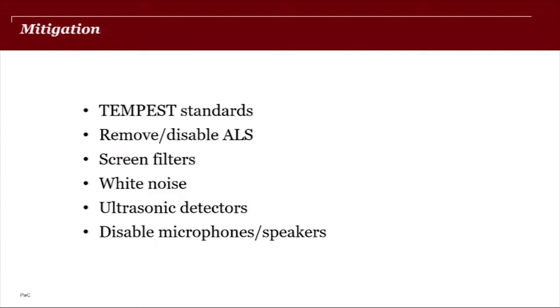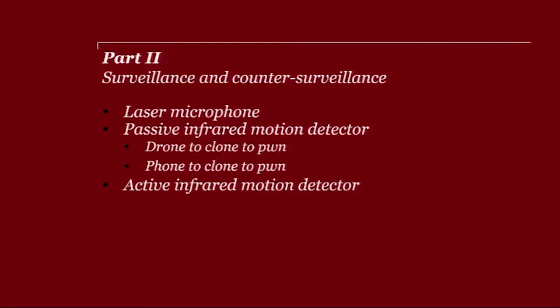So in terms of mitigation for the air gap bypasses I've presented, Tempest standards are always worth a look. They've got various ways to prevent data leakage and exfiltration. Removing or disabling ambient light sensors if they're not required. Screen filters do a really good job of muting brightness and intensity changes. And then for the ultrasonic stuff, you could be looking at white noise generators, ultrasonic detectors. Well, ultimately, if they're not required, disabling microphones and speakers altogether.